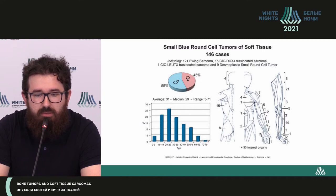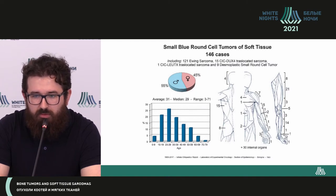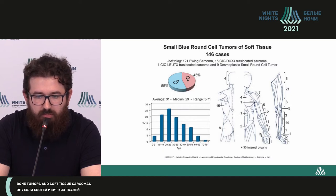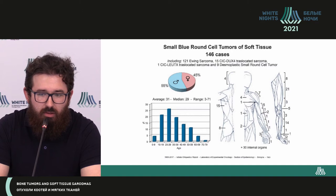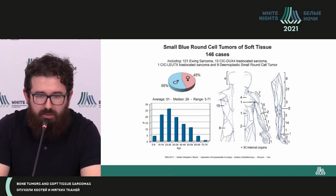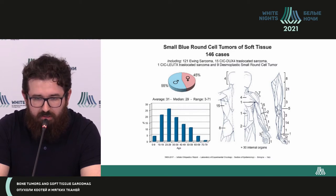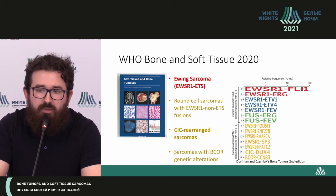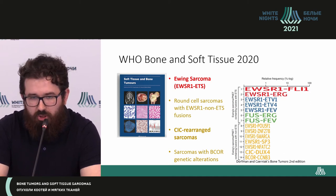This slide shows the statistics of Witzel Institute. You can see that the localization of soft tissue sarcomas — I mean small blue round cell tumors — is diverse. They could localize in almost any soft tissue, including visceral fat. The median age is 29–30 years, and males are predominant among patients with this type of tumor.